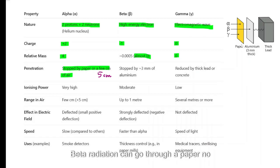Beta radiation can go through a paper, no problem, but it's usually stopped by about three millimeters thick aluminum. You can see it here. It gets stopped by that.